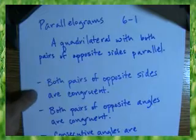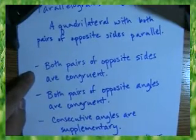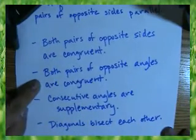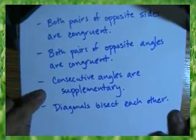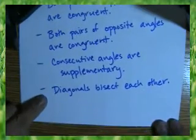Both pairs of opposite sides are parallel. Both pairs of opposite sides are congruent. Both pairs of opposite angles are congruent. Consecutive angles are supplementary. And diagonals bisect each other.